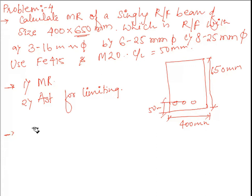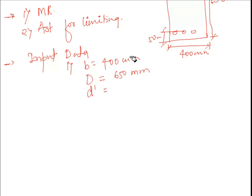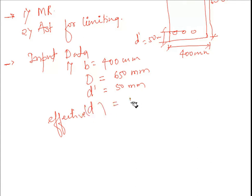Next step is input data — what has been given in the problem. Width of the beam b = 400 mm, overall depth D = 650 mm, clear cover d' = 50 mm. Therefore the effective depth d = 600 mm.